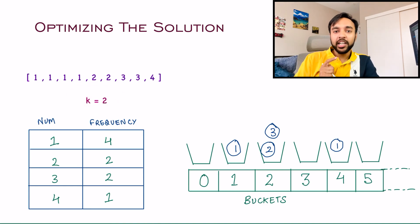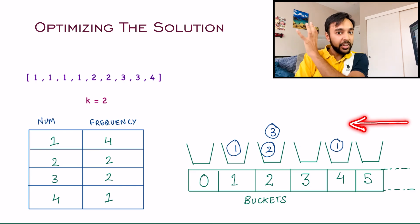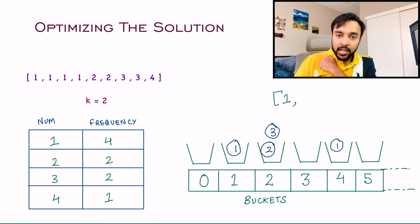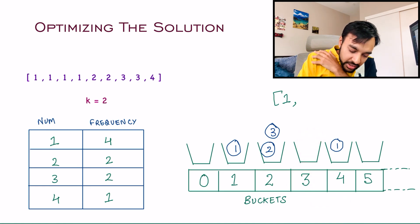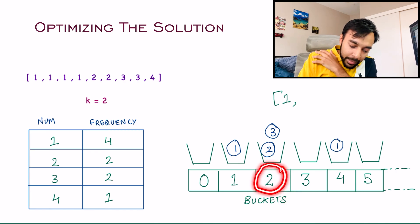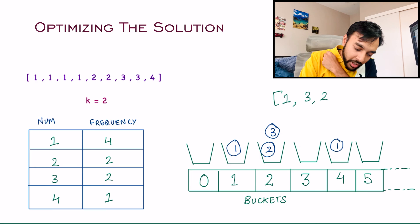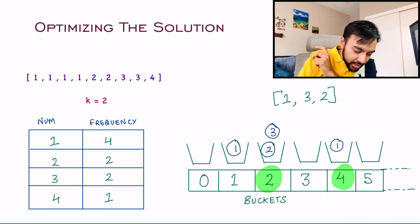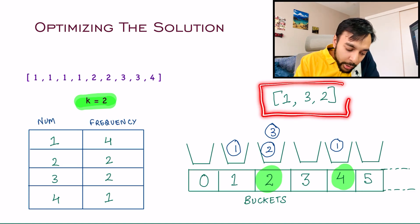Now you need to tell me the k most frequent elements. Start traversing these buckets from the end, because the maximum frequencies are at the end. You find bucket four — the element is one — so write down one. Move further back; bucket three is empty, so move one step back again. Now you have all elements with frequency two: elements three and two. Write those down. You have now covered bucket four and bucket two, and those are the only two buckets needed because the value of k was two. Hence, these are the two most frequent elements in the array.